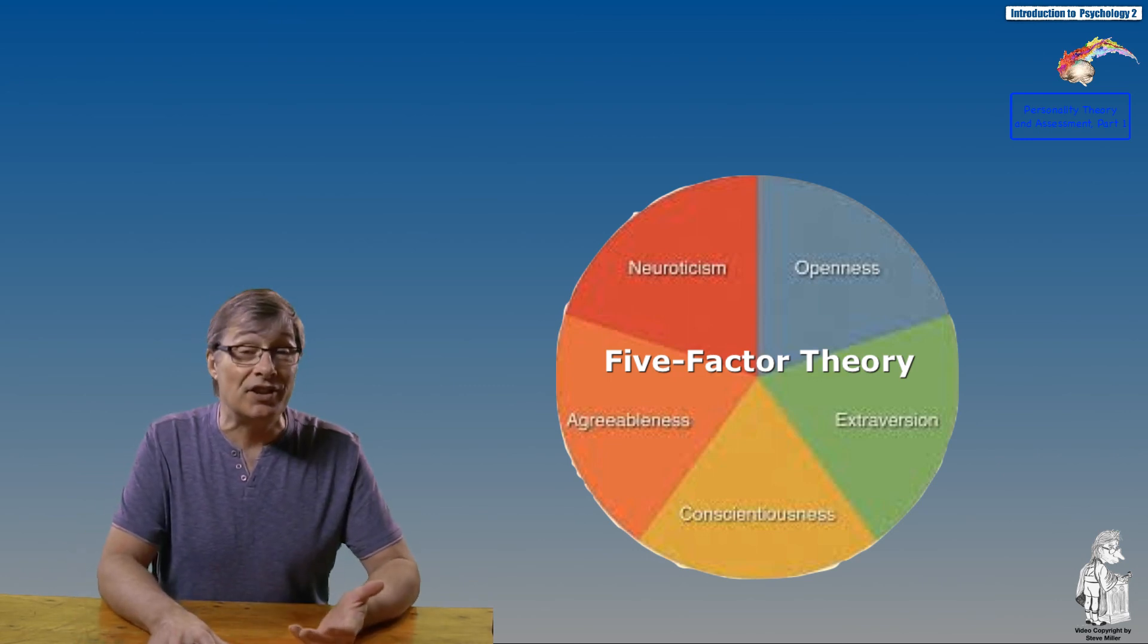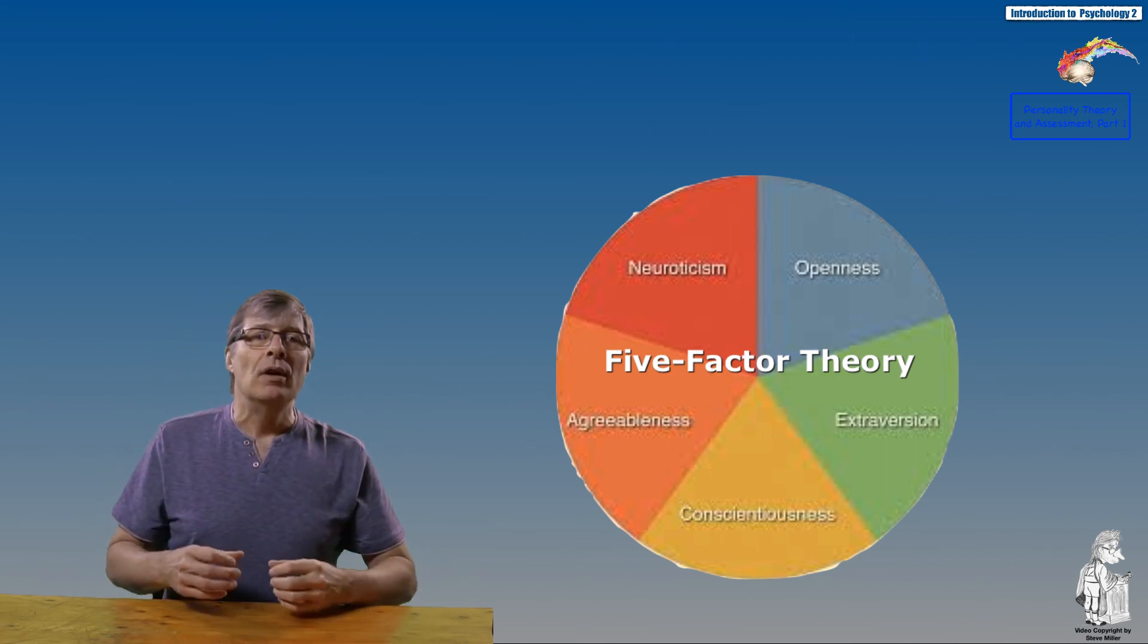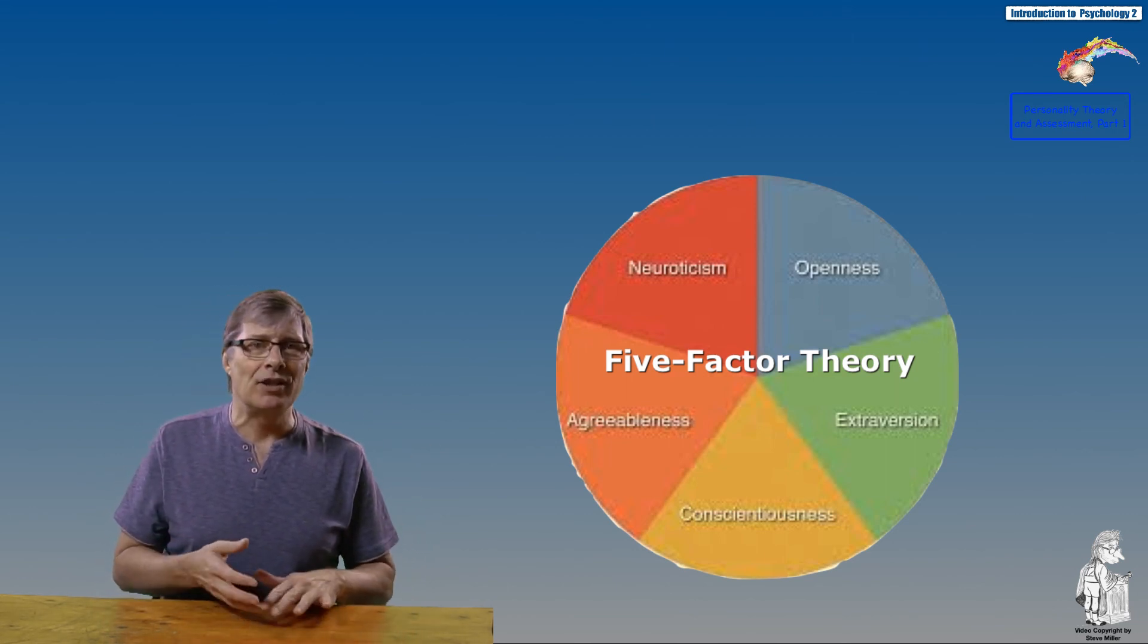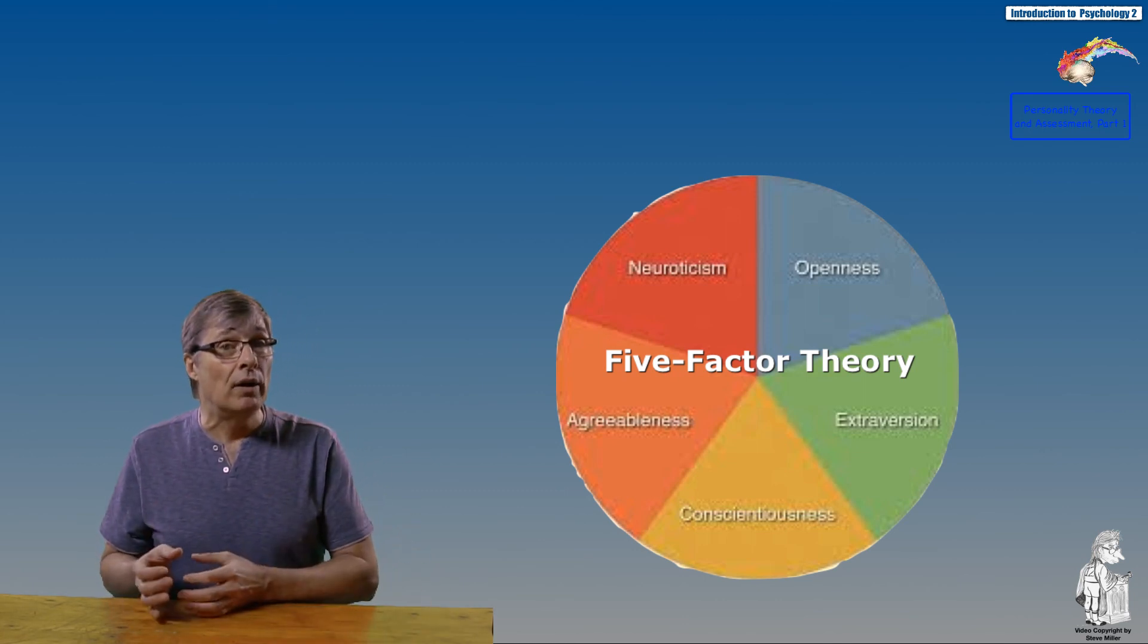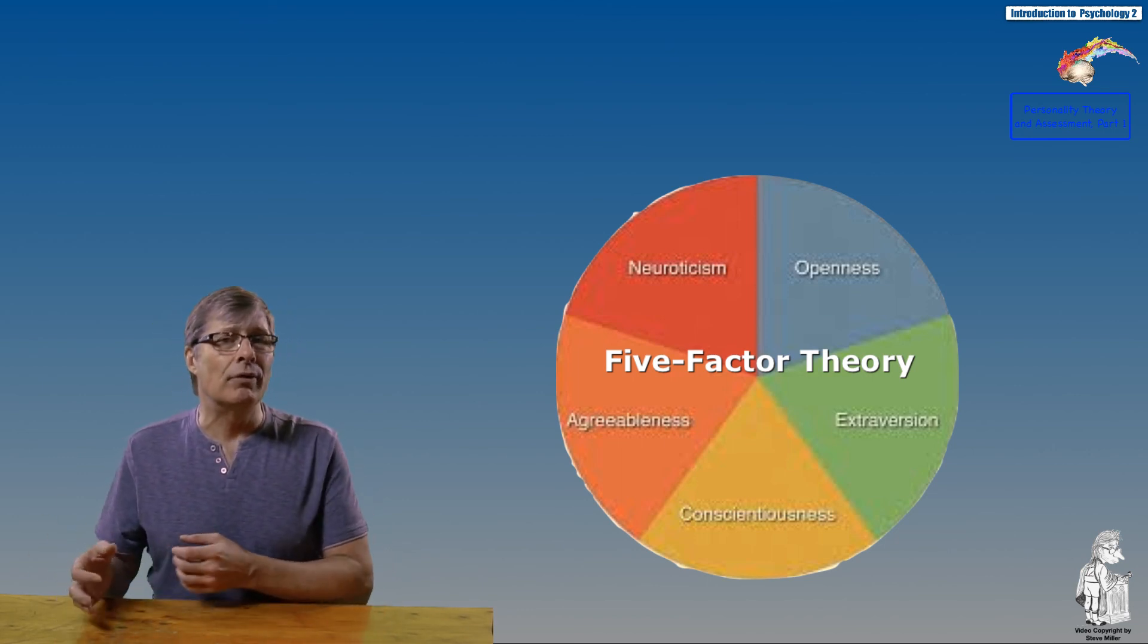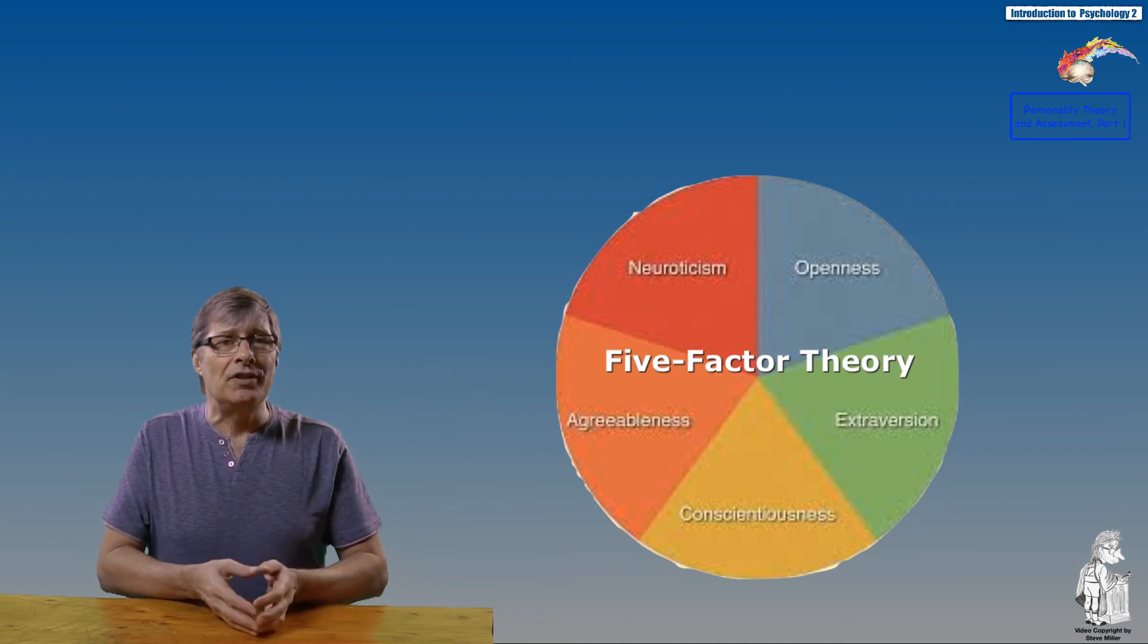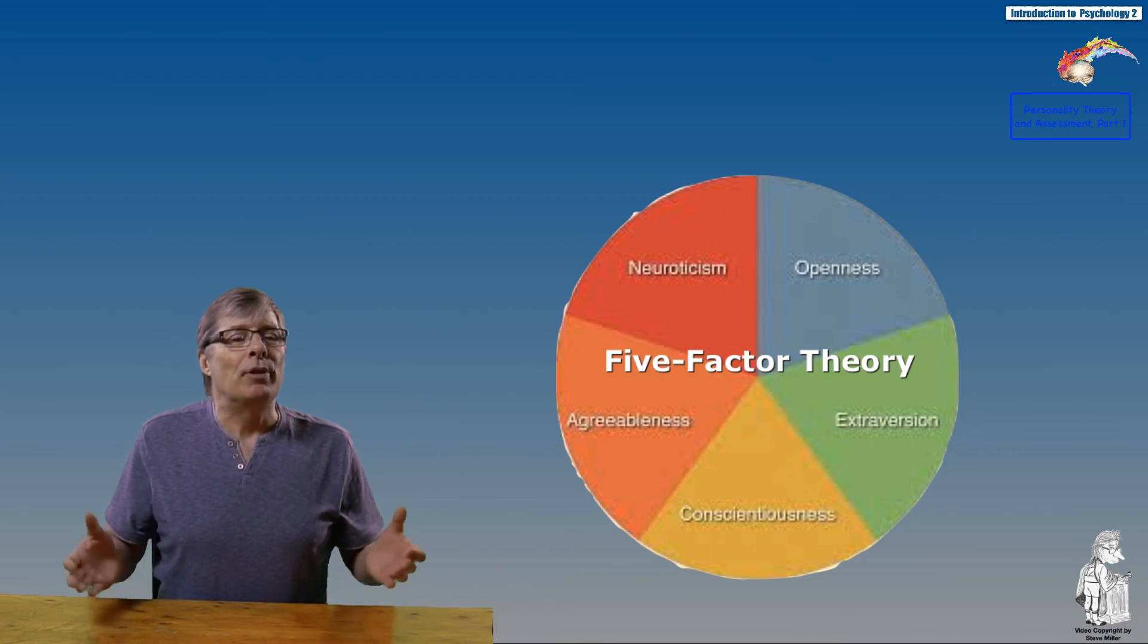Two, conscientiousness. High conscientiousness people are dependable, organized, reliable, responsible, thorough, hardworking, and persevering versus someone who is lower on this where they might be less dependable, more disorganized, impulsive, unreliable, irresponsible, careless, negligent, and even considered lazy. You can certainly see where there seems to be a more desirable and less desirable side to this, but all these things, wherever we fall, help contribute to our uniqueness of personality.